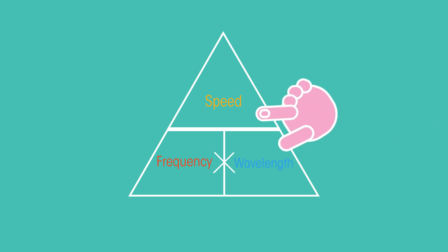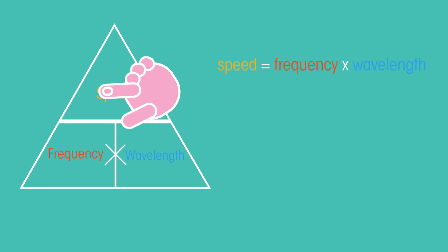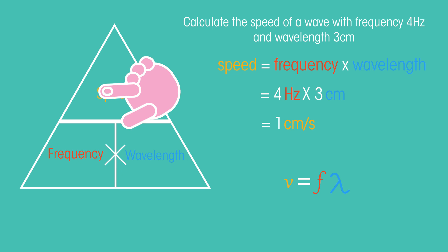If we want speed, we put our finger over speed, and it equals frequency times wavelength, which in symbols is this. We can use it to calculate the speed of a wave with frequency at 4 Hertz and wavelength at 3 centimeters.